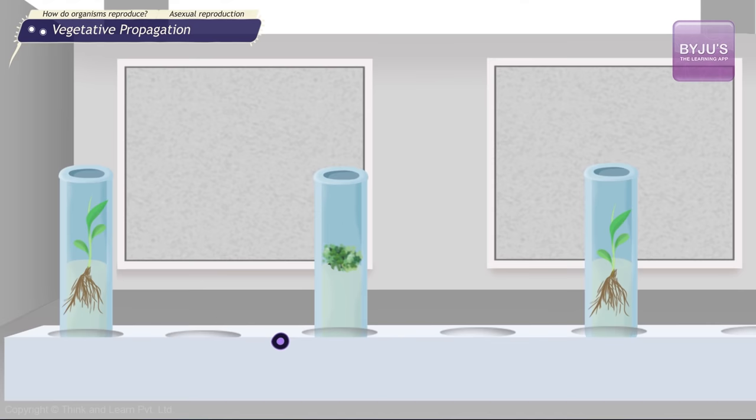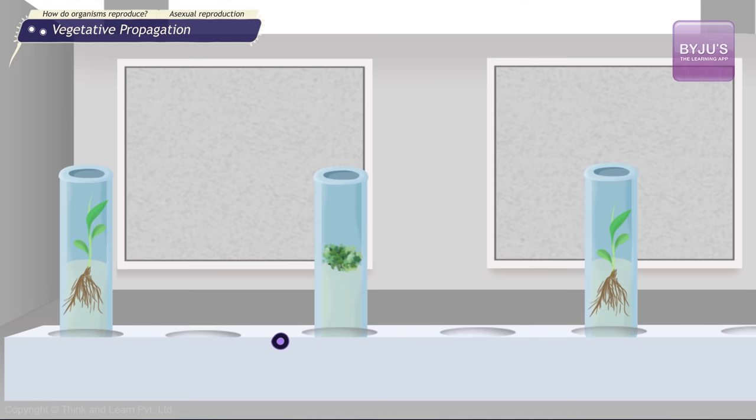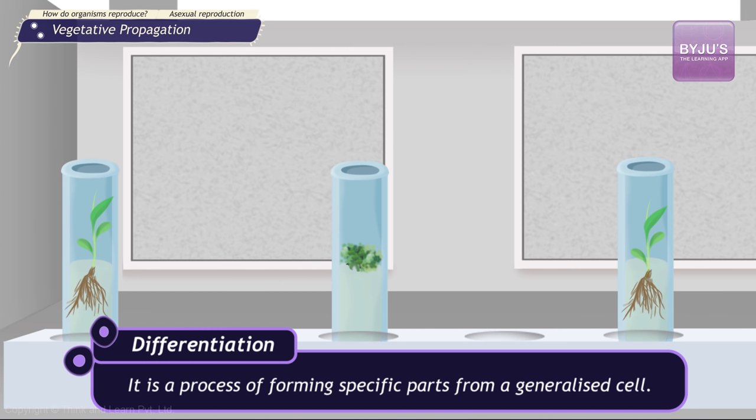This induces a process called differentiation, forming specific parts of a plant. And through this process of differentiation, new plantlets are produced.